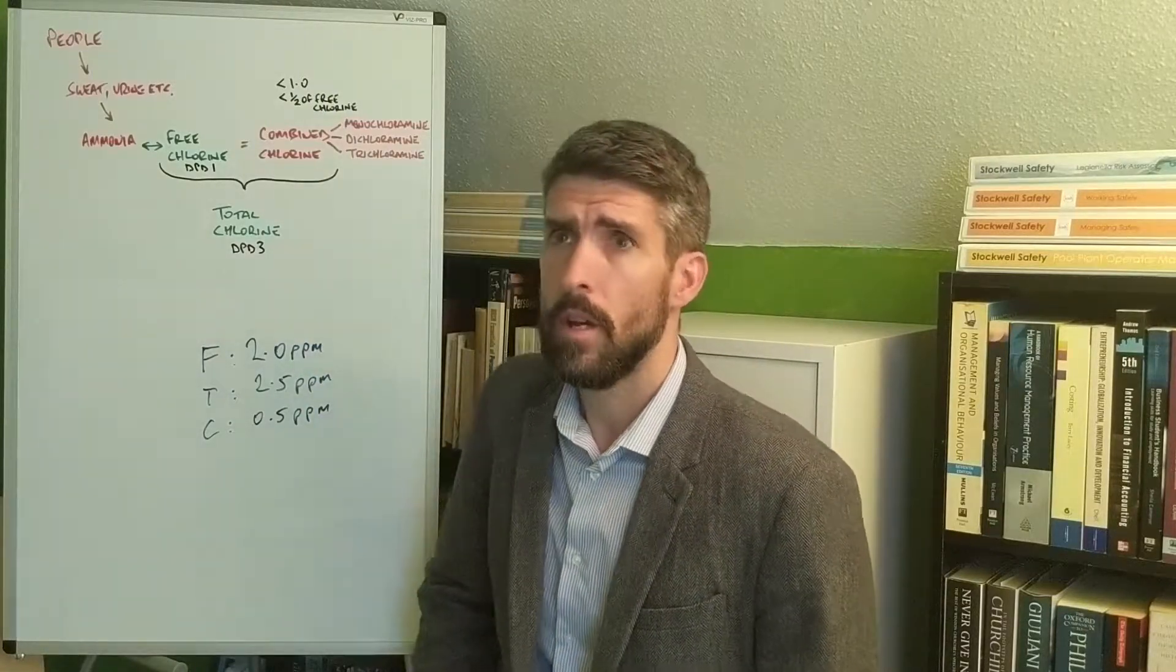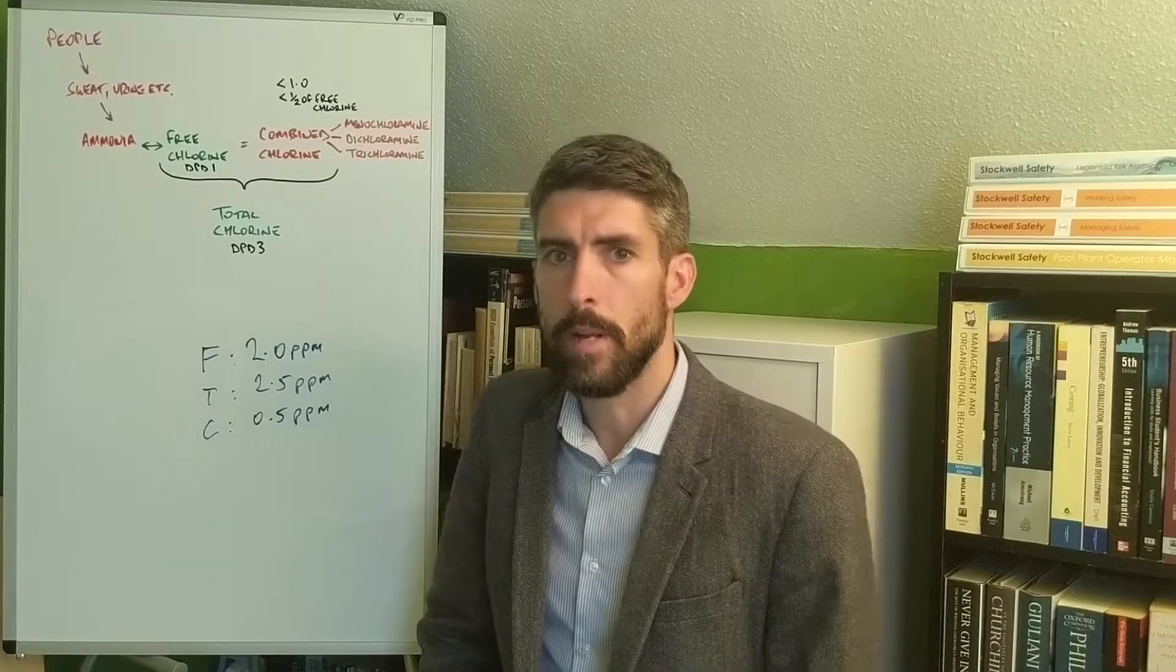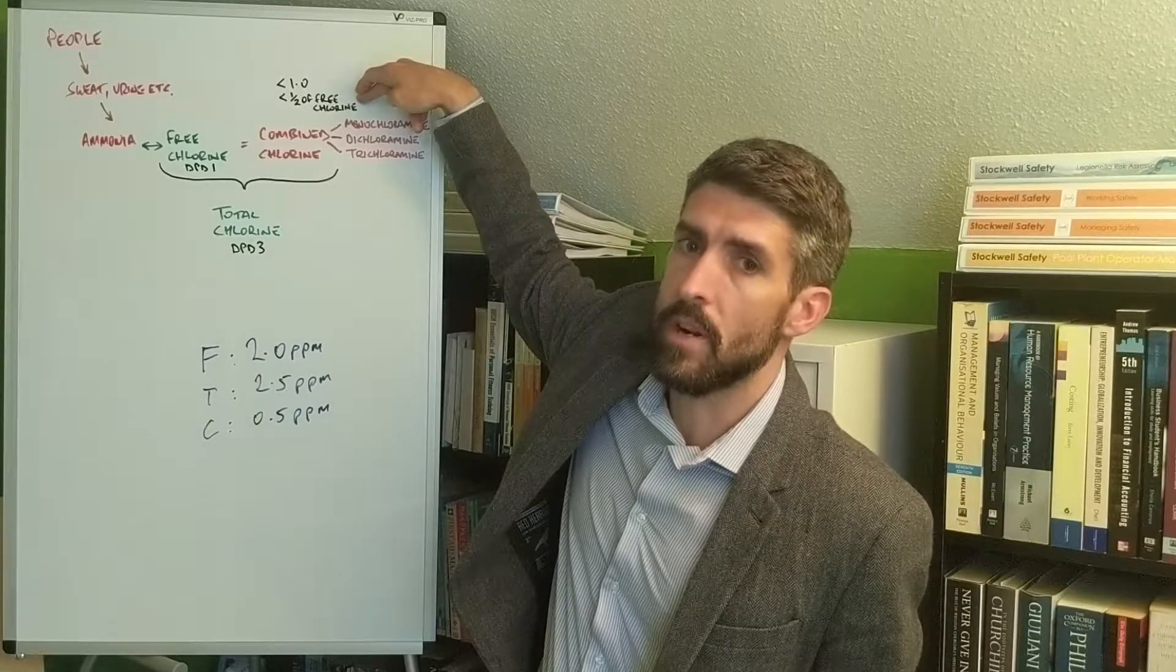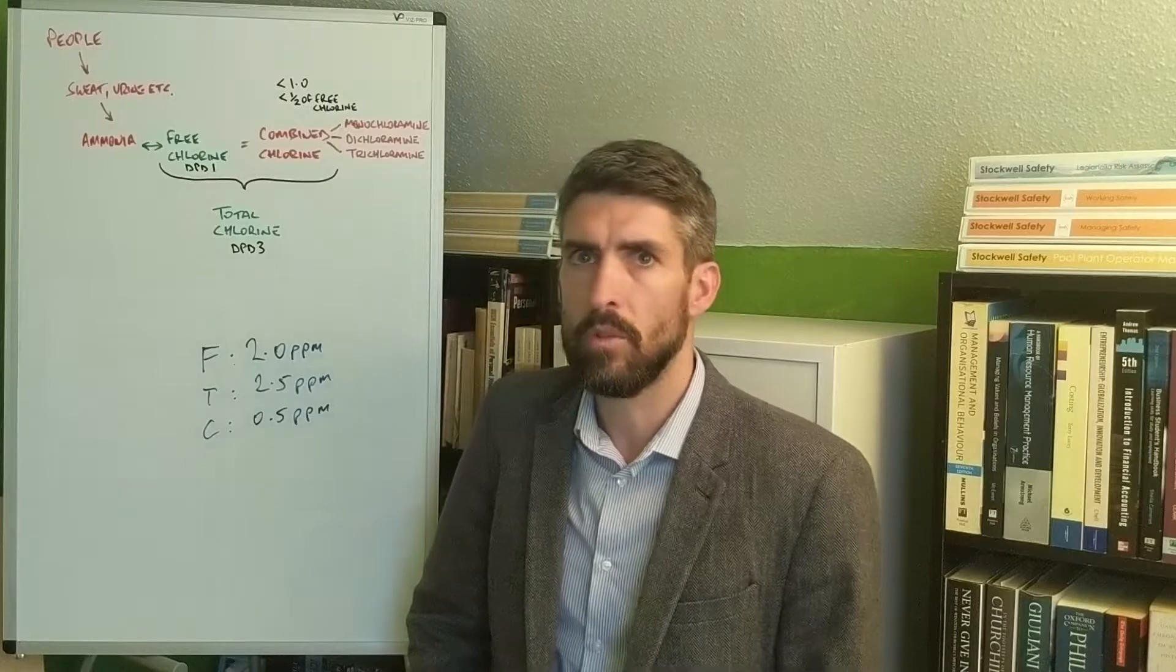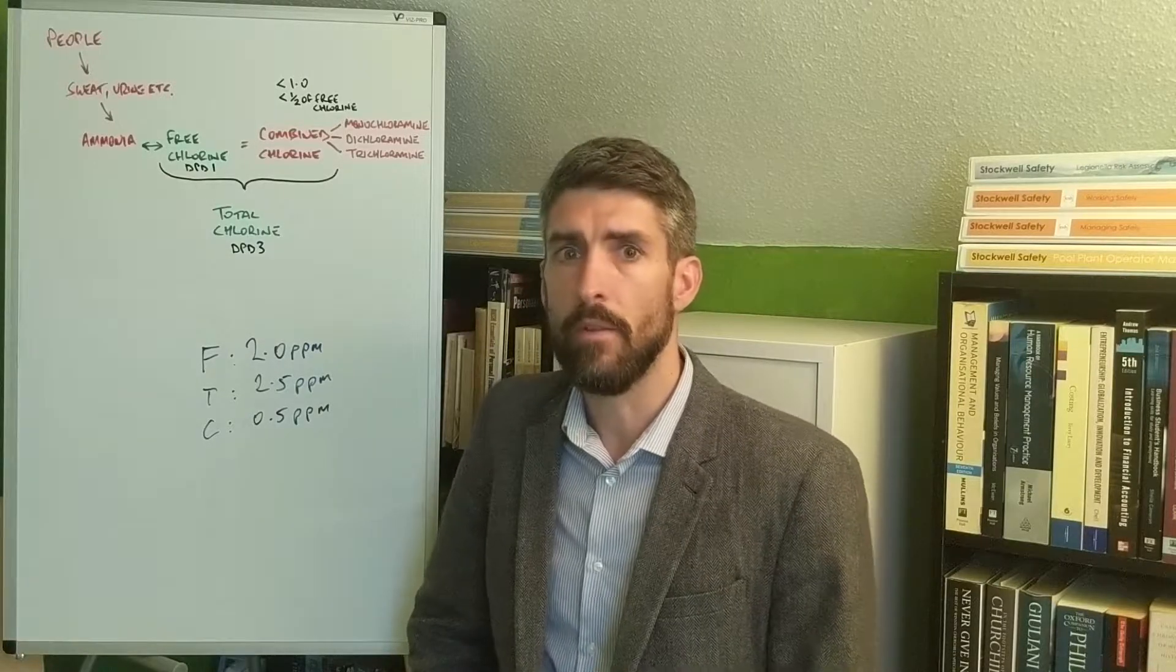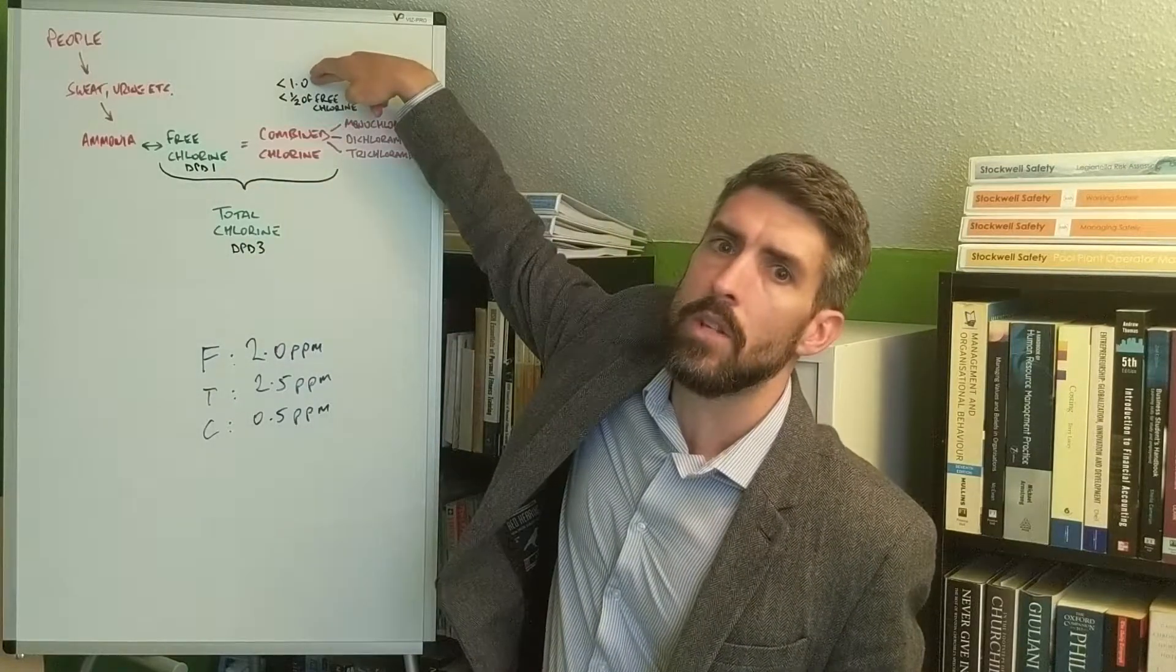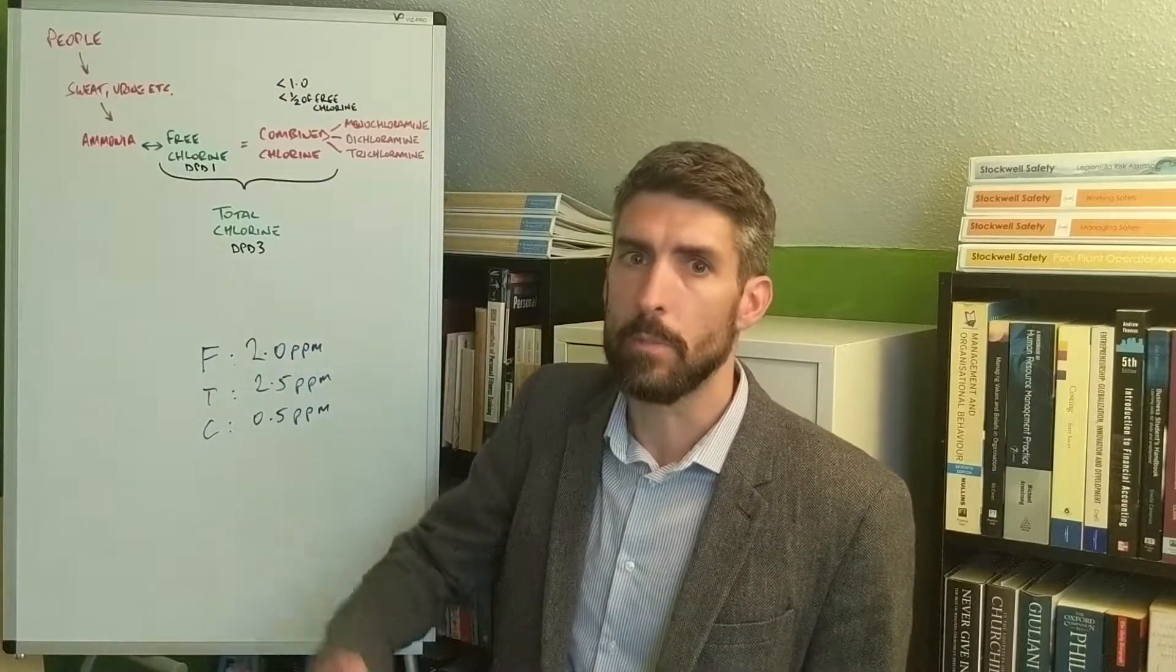For example, if you've got a free chlorine of 1.5, your target to get your combined chlorine level below would be 0.75, since 0.75, which would be half of the free, is less than one, so you'd use that as your target. Whereas if it was a spa pool operating with a free chlorine reading of four, well half of the free is two. You wouldn't want two parts per million of combined chlorine. In that scenario you'd want to use the top one here, less than one, as your target. You'd want to keep the free chlorine reading at four but have the total chlorine reading at no more than five.